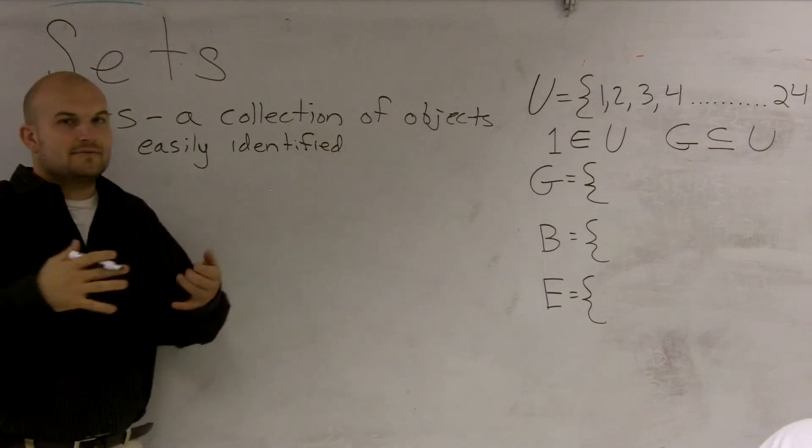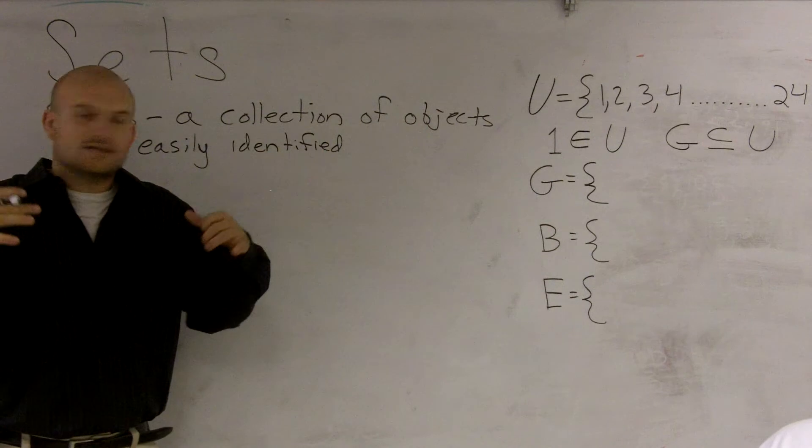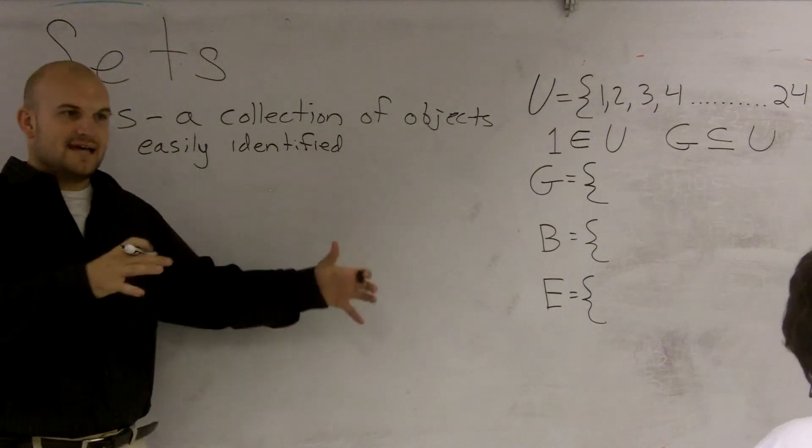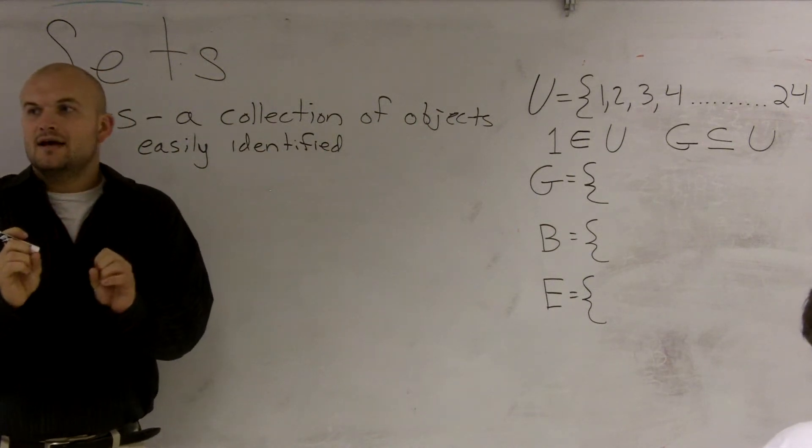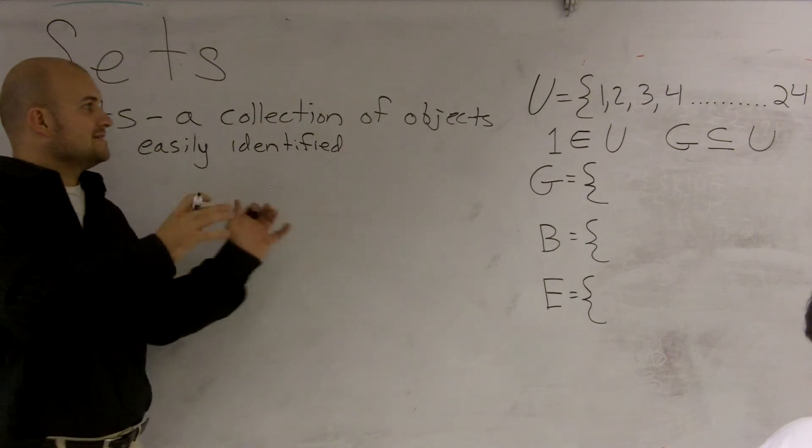And what I mean by easily identified is you have to be able to know if that object has to be inside that set. It has to be identified and known that that object is in that set.